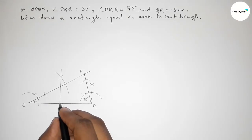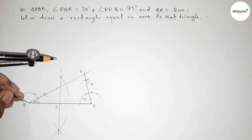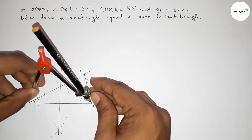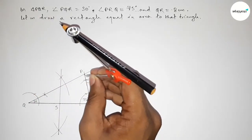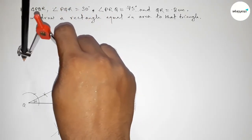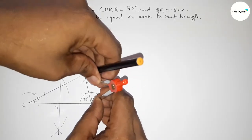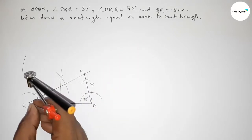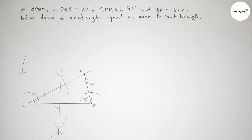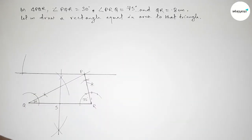Taking the length QR equal to 8 centimeters using the compass. Next, we have to draw a parallel line with QR. Putting the compass on point P and drawing an arc, then taking the length and putting the compass on point Q and cutting here. Both curves intersect at a point — joining this line, which is parallel to QR.